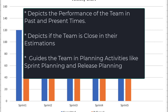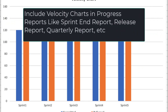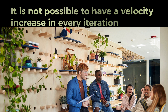Similarly, in release planning, teams divide the size of the release by their average velocity to calculate how many iterations will be required to complete the release work. Therefore, do add velocity charts to your project reports — whether sprint-end reports, quarterly reports, or any other. By looking at velocity charts, teams can govern whether they have been estimating correctly and whether they are improving over time — gradually increasing their velocity. However, expecting a velocity increase after every single iteration is neither possible nor productive for the team.